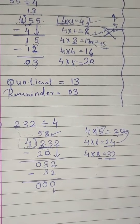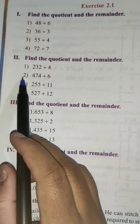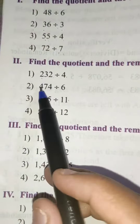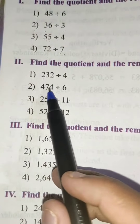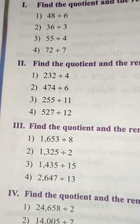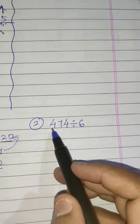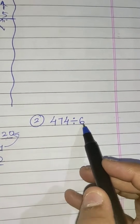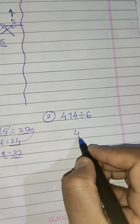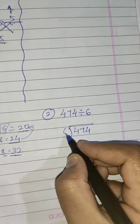Now we will take one more example from the textbook — the second one. That is 474 divided by 6. So I have written the same example: 474 divided by 6. Let's write it out.